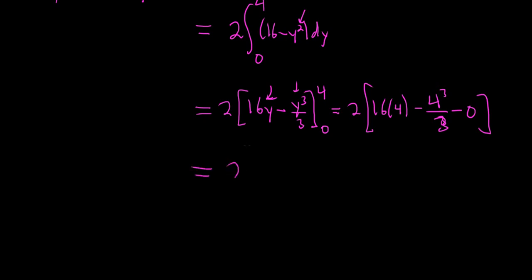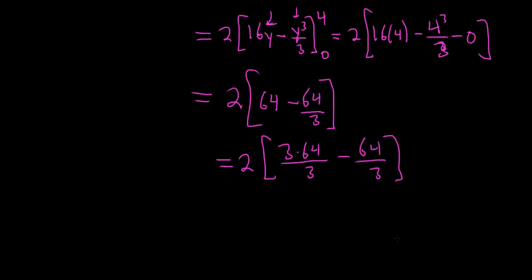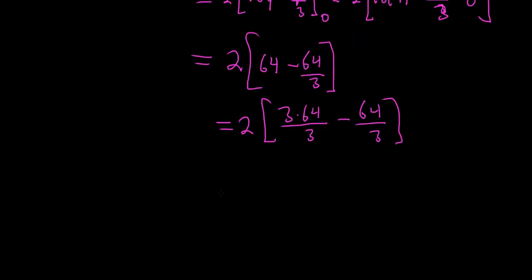Let's be really careful here. This equals 2 times, so 16 times 4 is 64, 4 cubed is also 64, so 64 minus 64 over 3. Let's write this as 2 times 3 times 64 over 3 minus 64 over 3. It's just a clever trick so that you can actually subtract them with the same denominator.